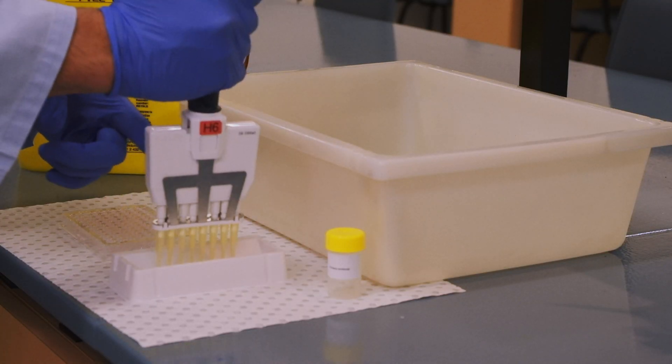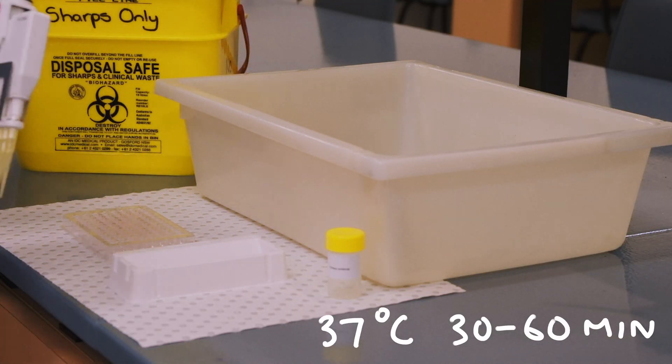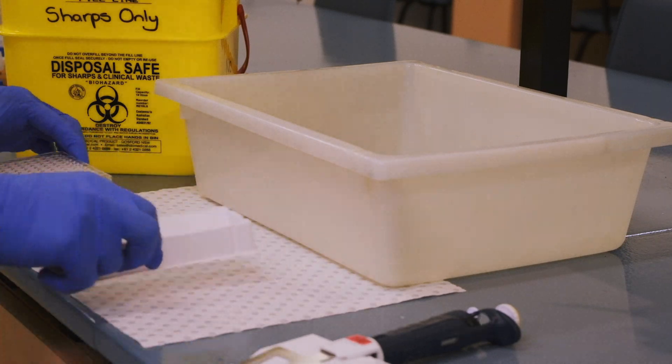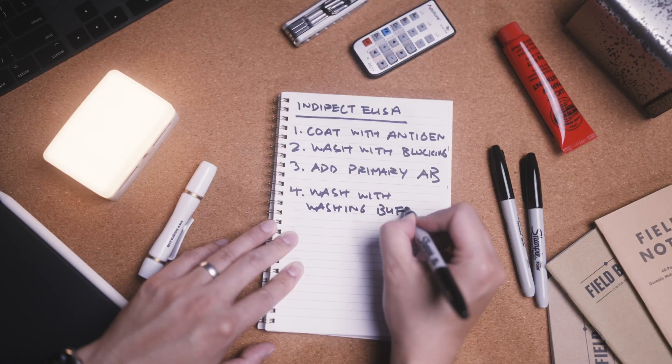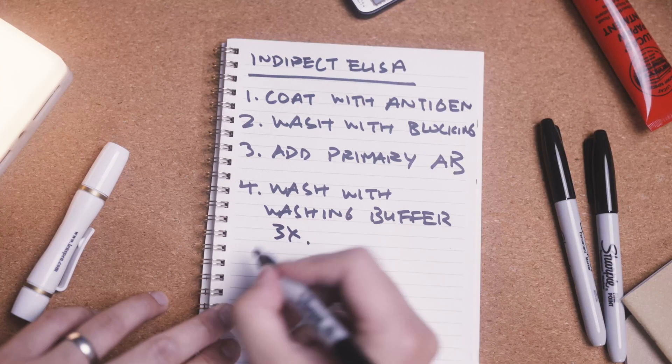The plate is then incubated at 37 degrees Celsius for 30 to 60 minutes, and at this point, the primary antibody should have bound the antigen. However, before the secondary antibody can be applied, any unbound primary antibody needs to be washed off in washing buffer.